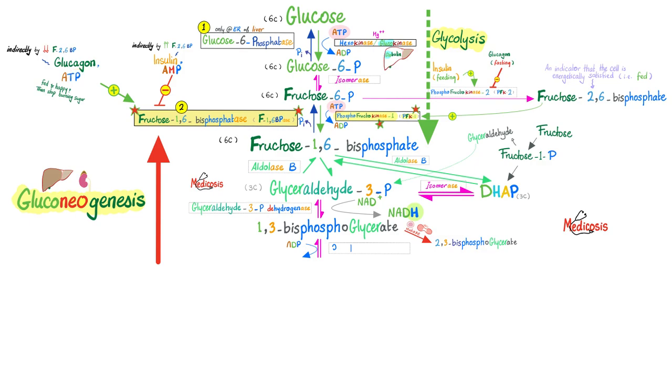Which means insulin stimulates the formation of fructose 2,6-bisphosphate to stimulate glycolysis in the insulin land and inhibit the opposite. It inhibits fructose 1,6-bisphosphatase 1. And that's why choice C was incorrect. As for glucagon, yes indeed. Glucagon is the land of scarcity, the land of fasting and starvation. It stimulates fructose 1,6-bisphosphatase, and it does the opposite over here. It inhibits the formation of this, which is fructose 2,6-bisphosphate. All of this was covered in greater detail in my video titled Gluconeogenesis. You will find it in my biochemistry playlist.